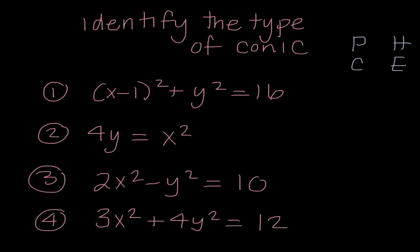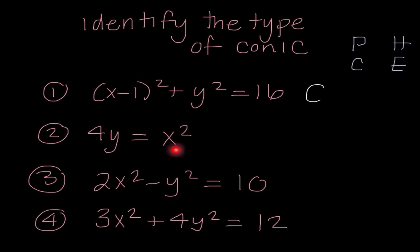Looking at the first example: x minus 1 squared plus y squared equals 16. They're both squared and have the same coefficient of 1, so that makes this a circle. Number 2: 4y equals x squared. Only one variable is squared, so it is a parabola.